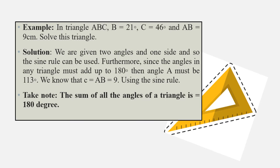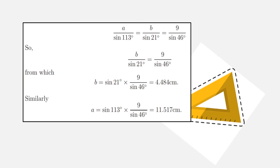We know that c = AB = 9. Using the sine rule—take note, the sum of all angles of a triangle is 180°—so for our solution: a/sin 113° = b/sin 21° = 9/sin 46°. Therefore, b/sin 21° = 9/sin 46°.